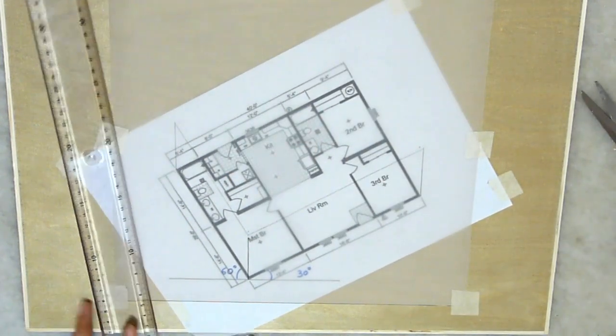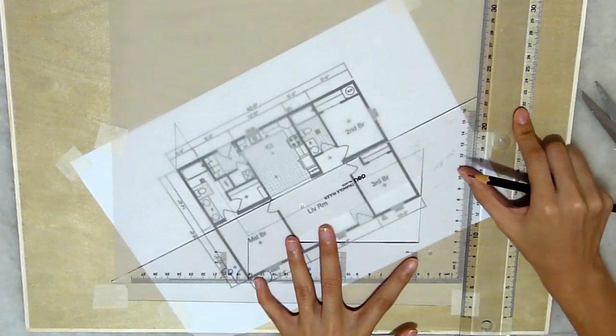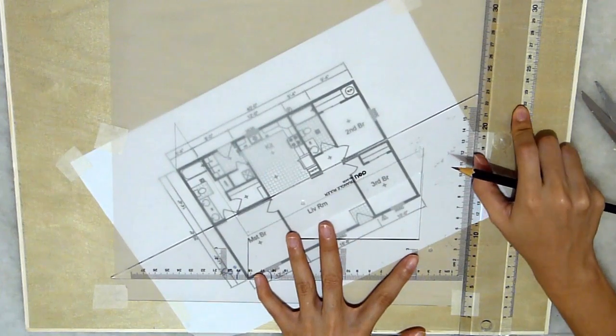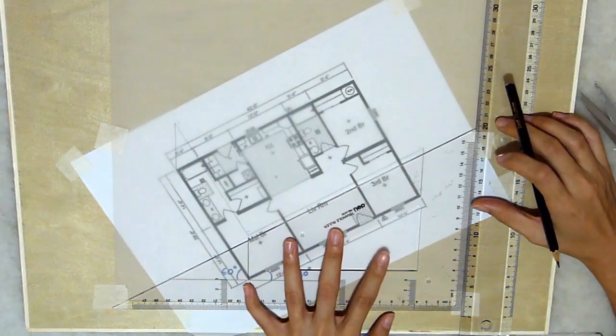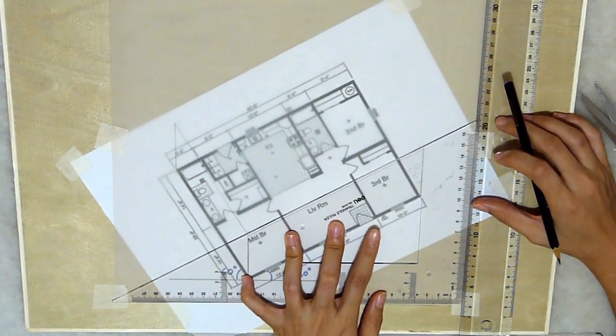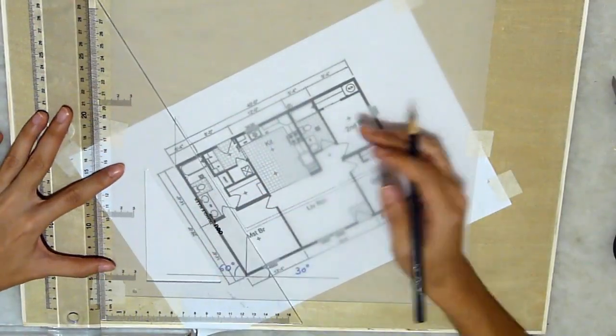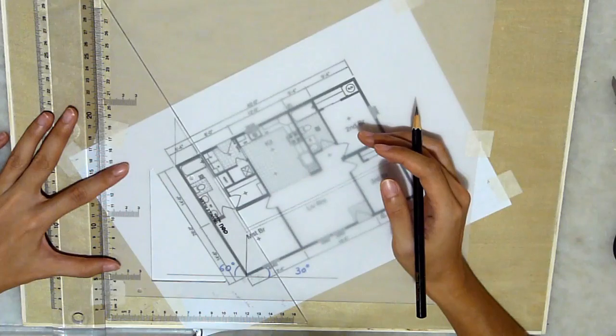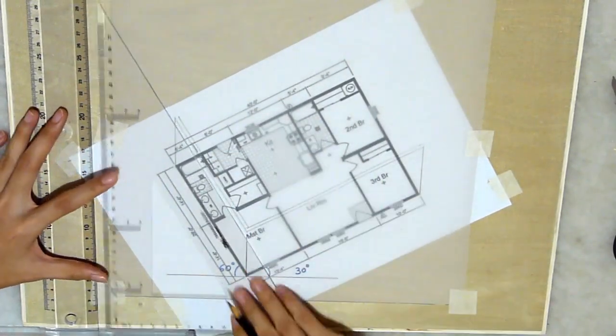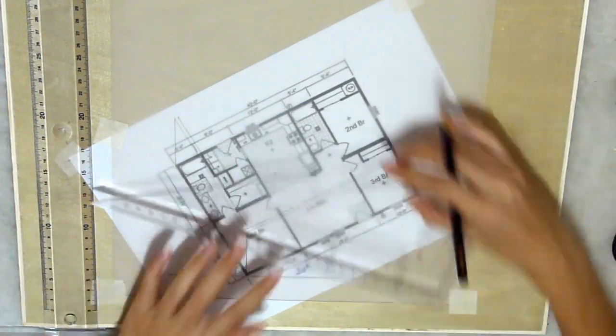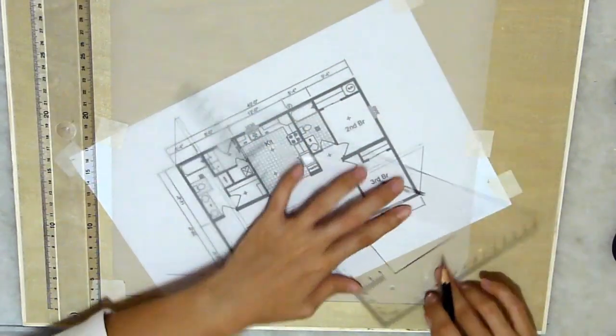And then the next thing we want to do is, again, do a 30 degree reference by doing this. And then you slide it across to ensure that the two points meet. And we're done with the thickness of the wall. And I'll just casually join these lines together.